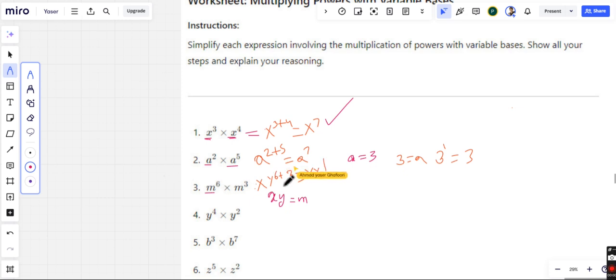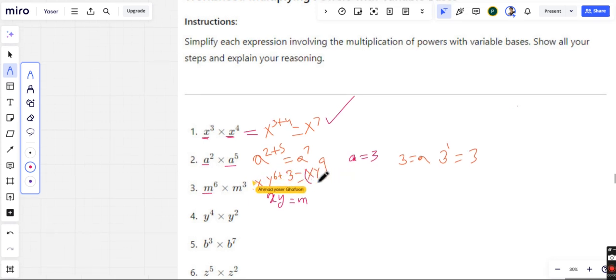Good, but remember one thing: if you have two variables, then you need to put parentheses around them, because the power applies to both. Understand? Because M equals both X and Y. Can you practice on question number 4?